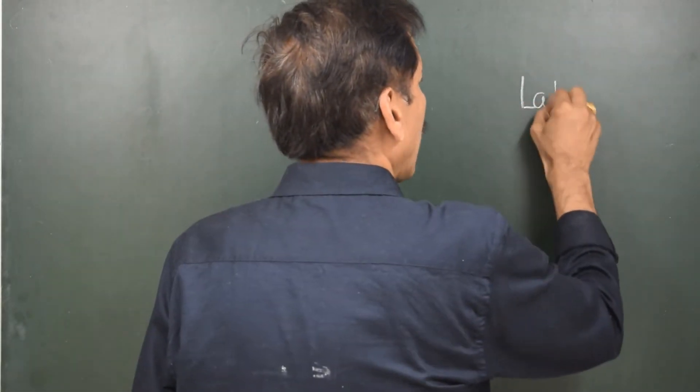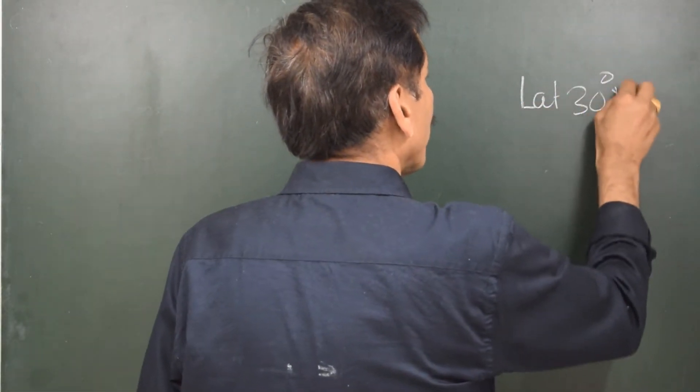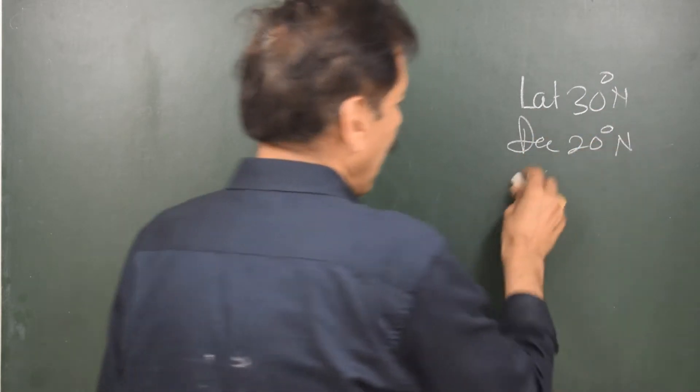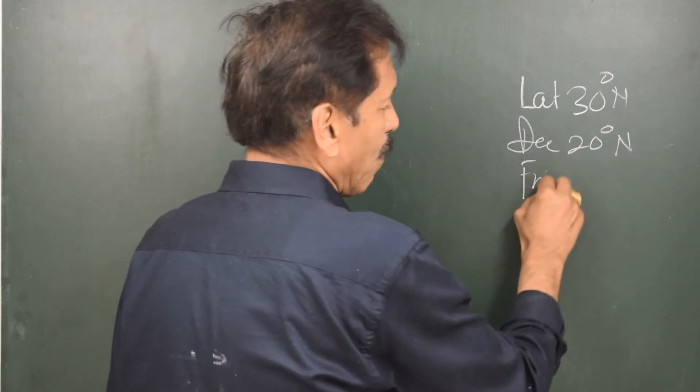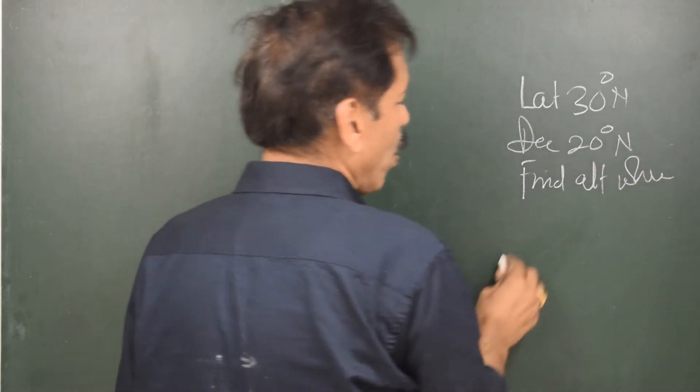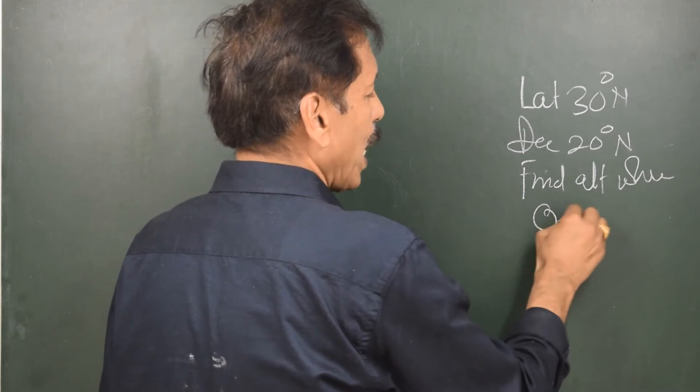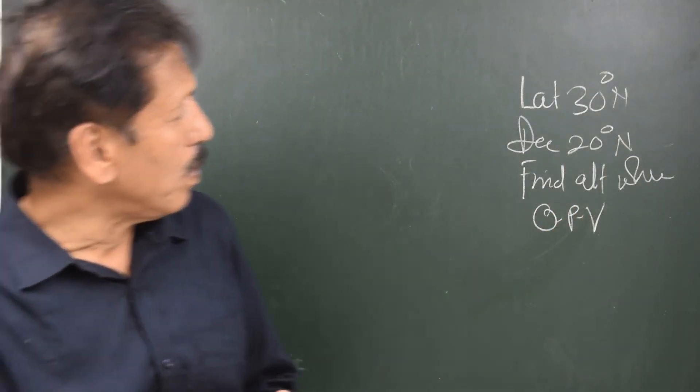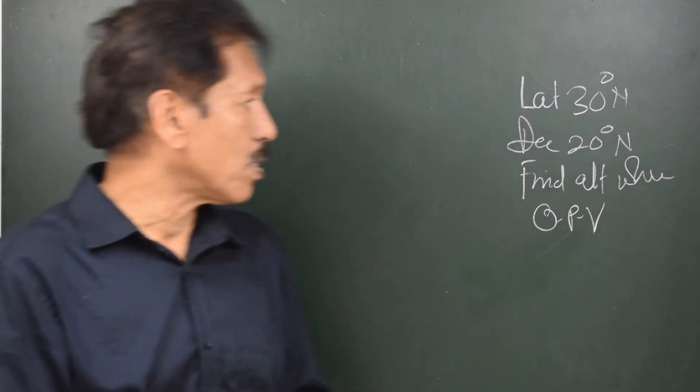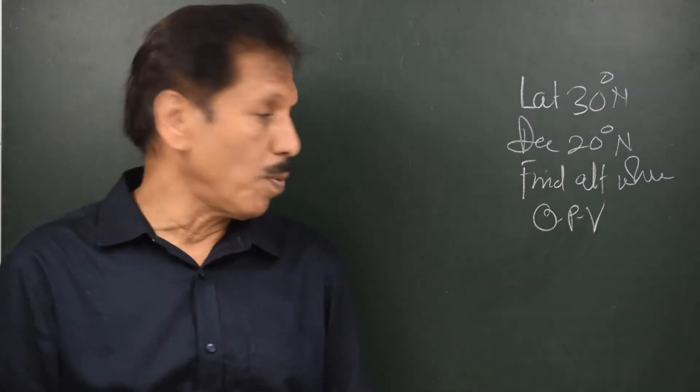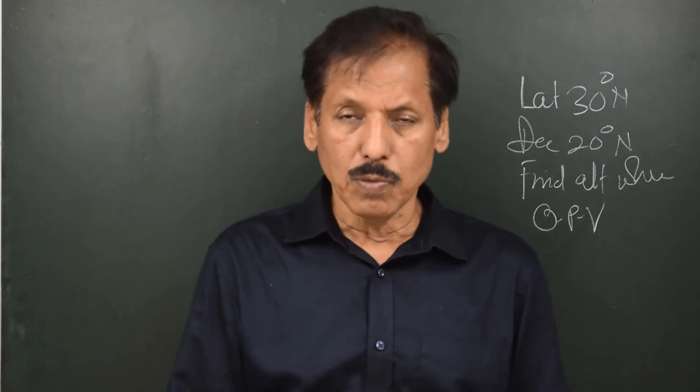So let us say, the question is, the observer's latitude is 30 degrees north and declination is 20 degrees north. And you may be asked, find the altitude when body is crossing observer's prime vertical. That is the question. Let's make it very simple. Latitude 30 degrees north, declination 20 degrees north, find the altitude of the body as it crosses observer's prime vertical.